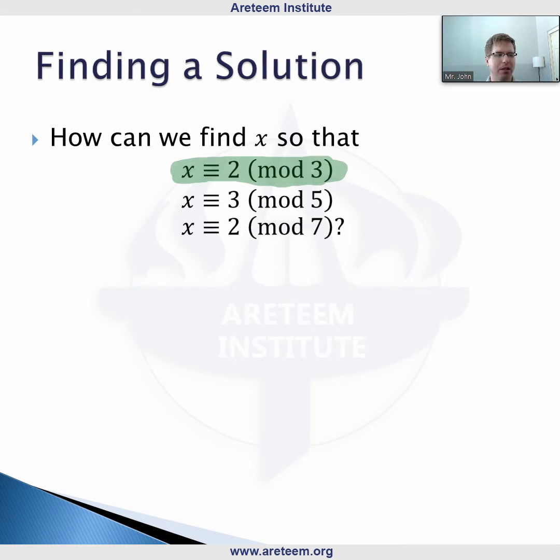We're looking for an x that is 2 mod 3, 3 mod 5, 2 mod 7. There's lots of different tricks to solve these questions, but I want to look at a basic, standard way that will work in general. Let's start with our first scenario, x ≡ 2 (mod 3).